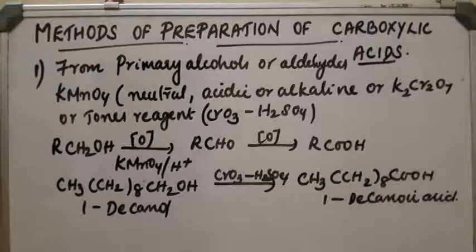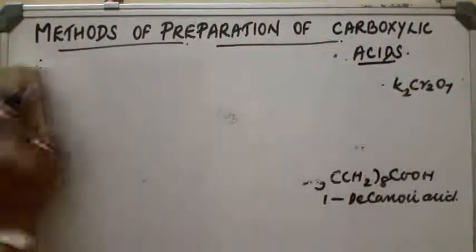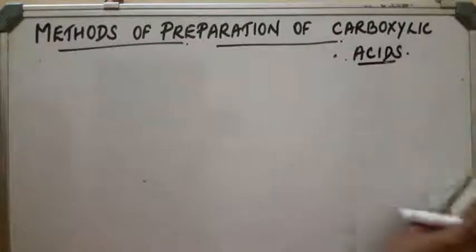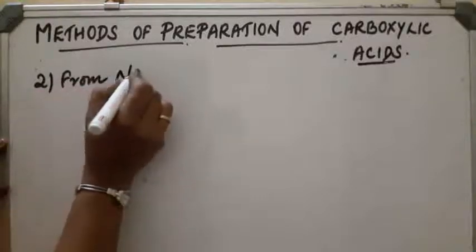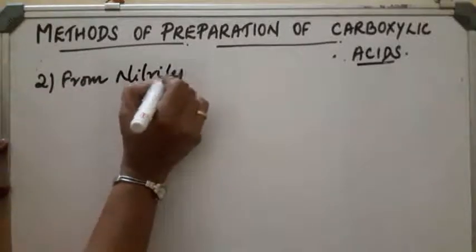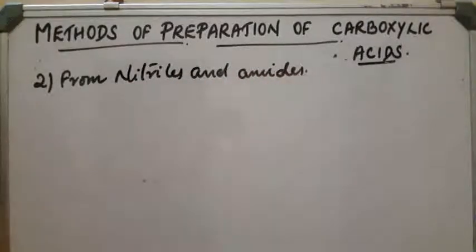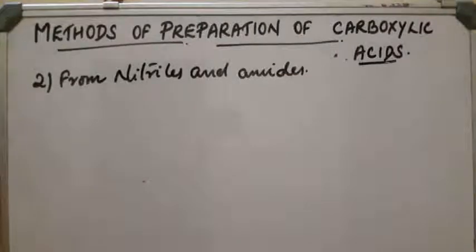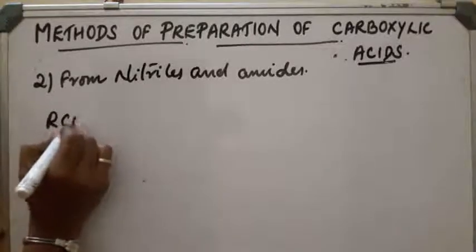Second method is from nitriles and amides. Nitriles are first converted to corresponding amides, which are then converted into the corresponding acids in the presence of acids or bases as catalyst. The reaction: RCN (nitrile) on heating in presence of acids or bases as catalyst.